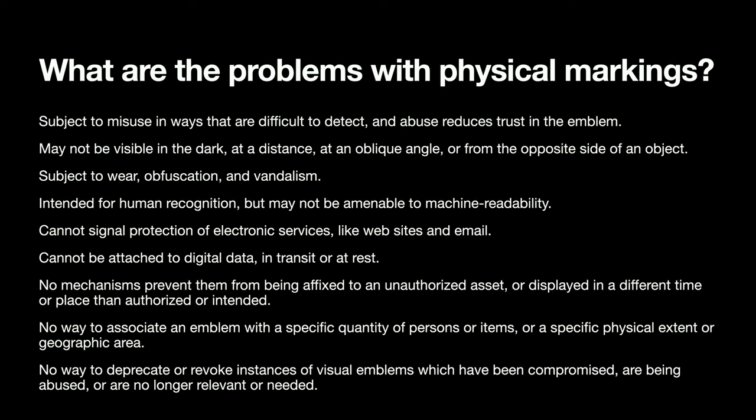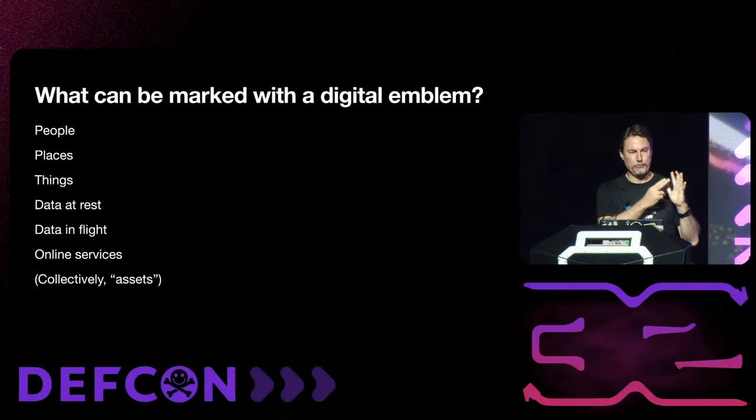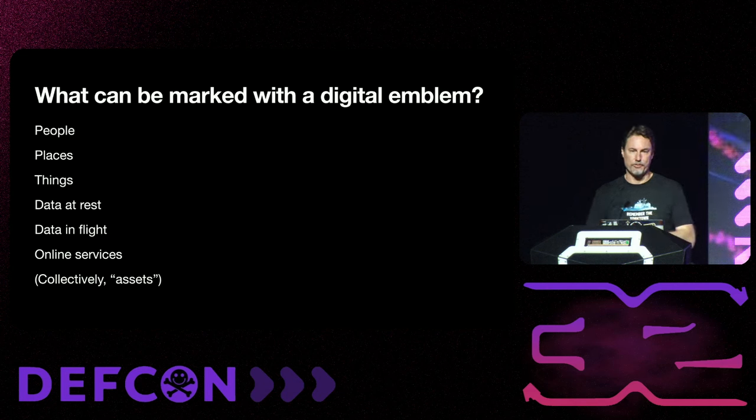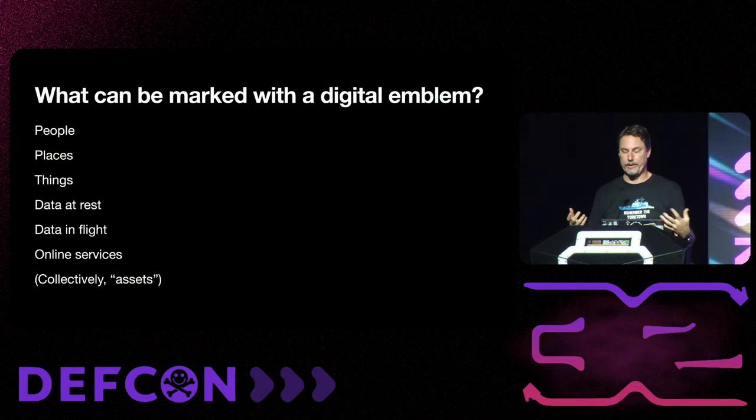If an attacker is coming in over the network, they can't see the physical thing they're attacking, so they can't see any marking stenciled on it. And for electronic services — not just data at rest or in flight, but like an email server — how would you mark that an email server was protected or licensed? Beyond that, when we get into cryptographic authentication we get a whole suite of additional capabilities around revocation, timing out, signature roles — things people doing physical markings with a stencil and a rattle can simply don't have.